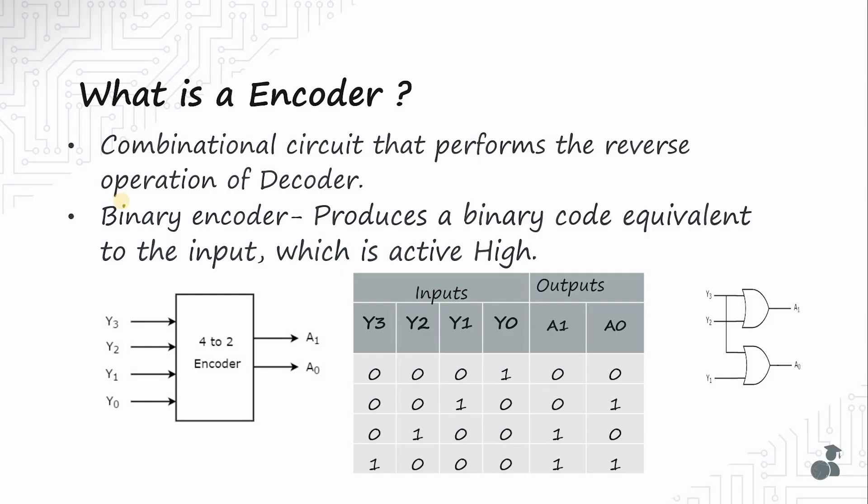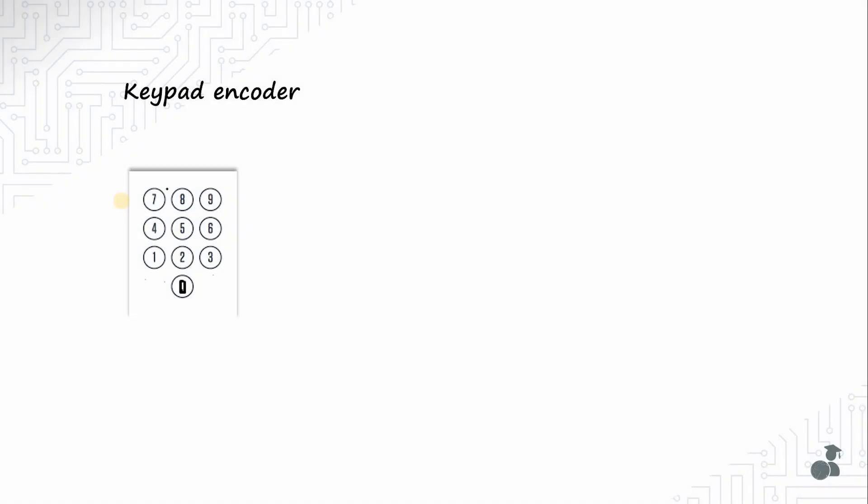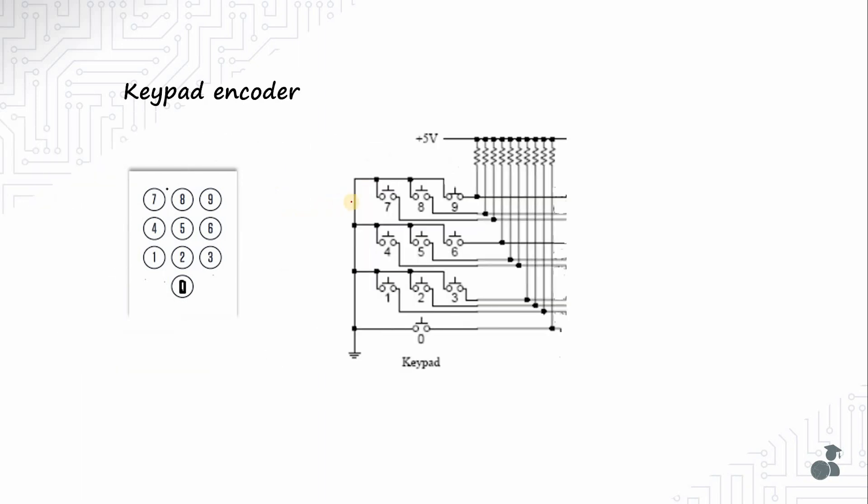Let's take an application example to understand better. You have a 10 digit keypad that you need to connect to a microcontroller for your project. The keypad internally is represented by this circuit. The lines are always 0 if the key is not pressed and if it is pressed it is set to 5 volts. So there are 10 output lines, one each for the 10 keys.